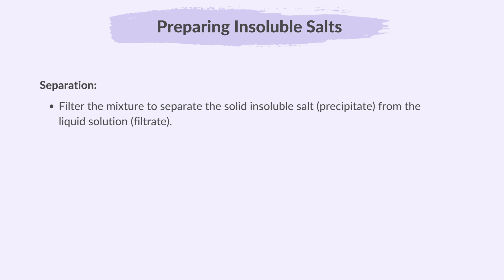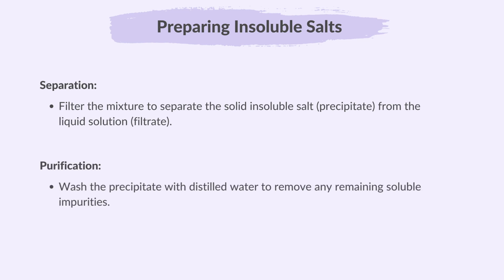Filter the mixture to separate the solid insoluble salt — that is the precipitate — from the liquid solution — that is the filtrate. Wash the precipitate with distilled water to remove any remaining soluble impurities, then dry the purified precipitate in an oven.